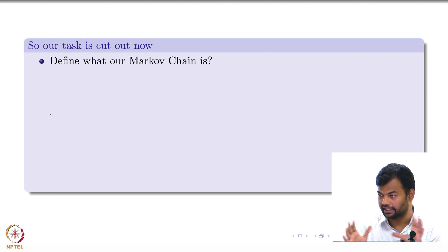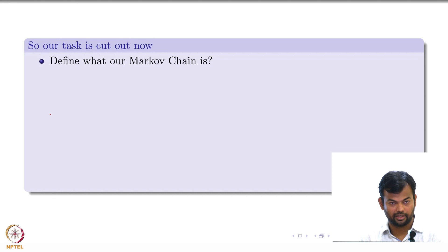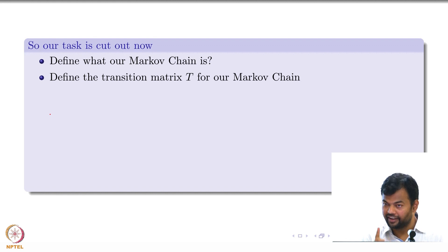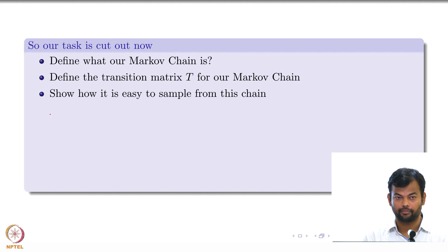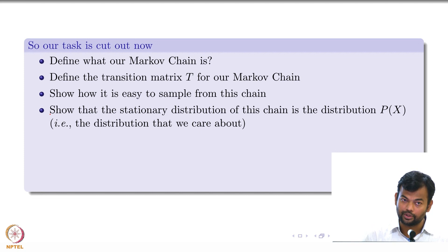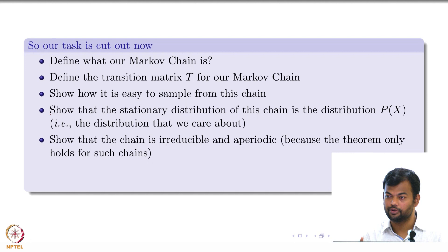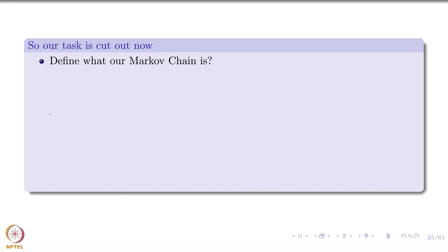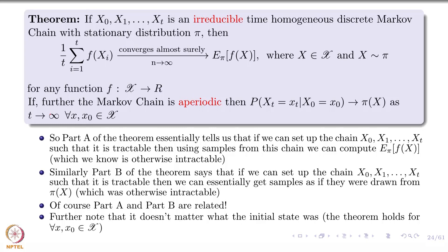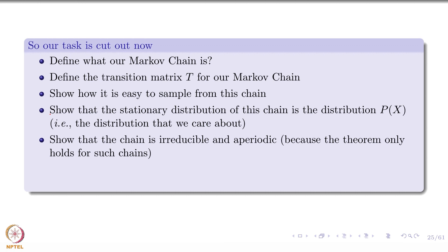Given this setup, our task is clear. We first need to decide what our Markov chain is going to be, which means specifying the transition matrix. I need to show that it is easy to sample from this chain — no expensive computations at each element of the chain. I need to show that the stationary distribution of the chain is P of X. I also need to show that the chain is irreducible and aperiodic, because those are the two properties on which the theorem relies. I have not yet defined what these mean, but I will define them soon and give intuition for why the chain we set up satisfies them.